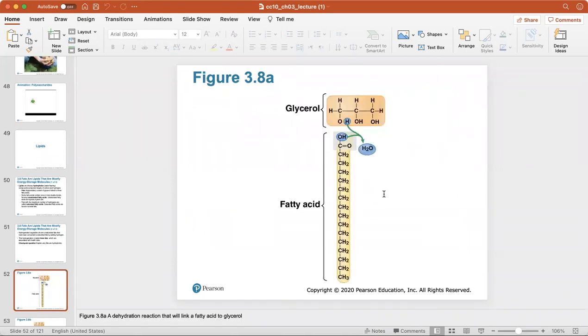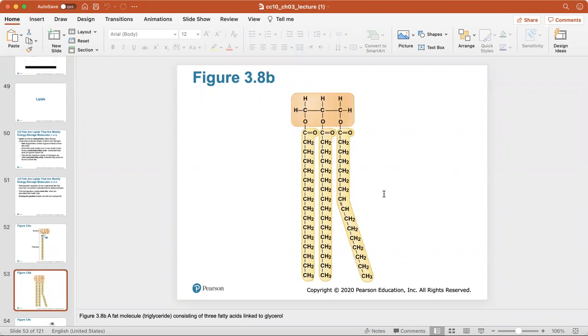Hydrogenated vegetable oils are unsaturated fats that have been converted to saturated fats by adding hydrogen. This hydrogenation creates trans fats which are associated with health risks. Explain why fats are hydrophobic. That's because their molecular structure doesn't allow them to dissolve in water. Here's a look at a dehydration reaction that will link a fatty acid to glycerol. Here's a fat molecule, a triglyceride, consisting of three fatty acids linked to glycerol.